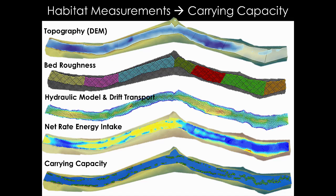We also use the hydraulic model to drive bioenergetics modeling, leveraging substrate sizes measured at a CHAMP site to develop a bed roughness raster. This allows predictions about net rate of energy intake in a spatially explicit way and predictions about carrying capacity. We've been doing a lot of work with life cycle modeling — a way to understand bottlenecks over the life history of a salmon population — which is critical for managers understanding how to recover fish populations and which habitat actions to implement and where.